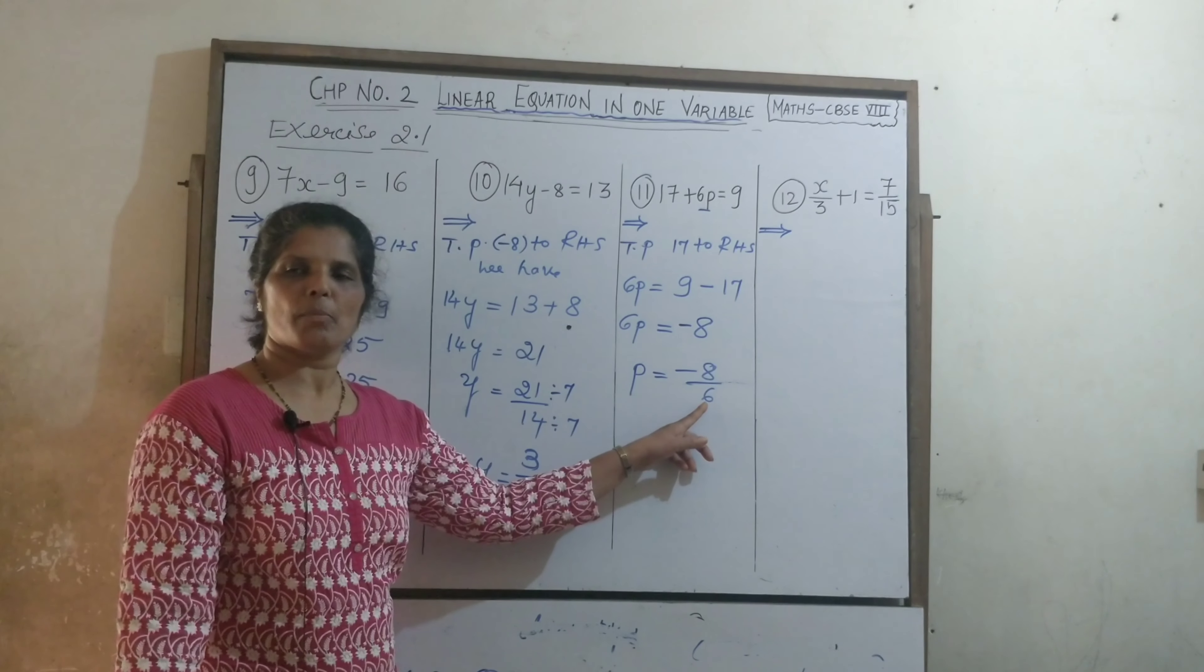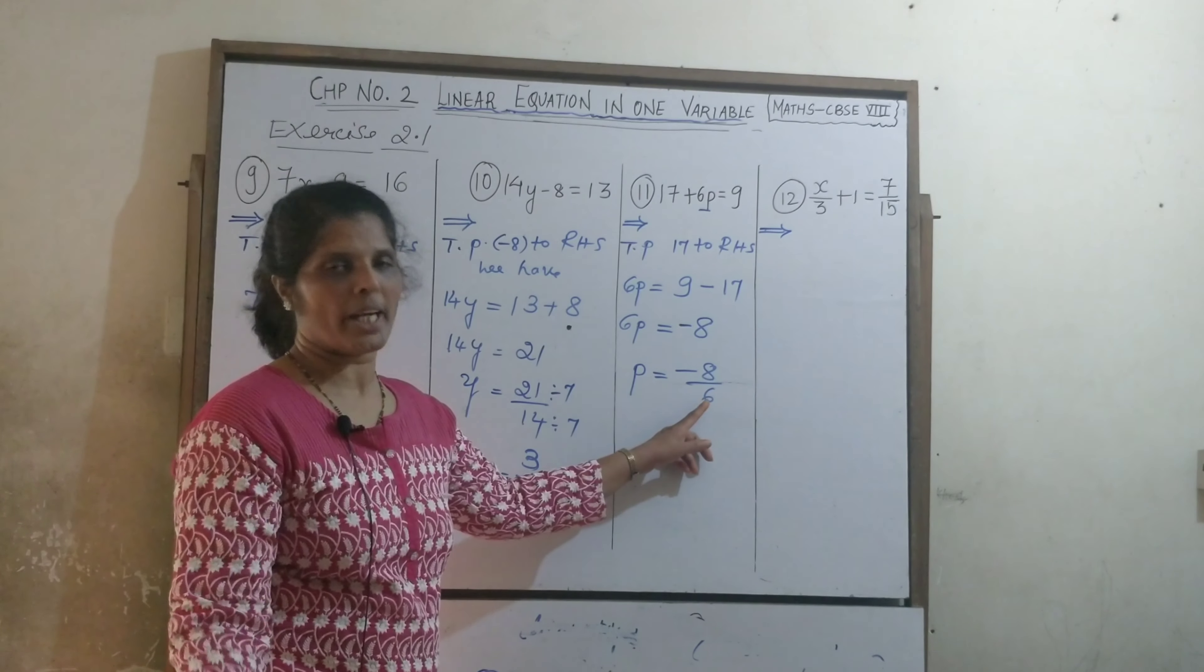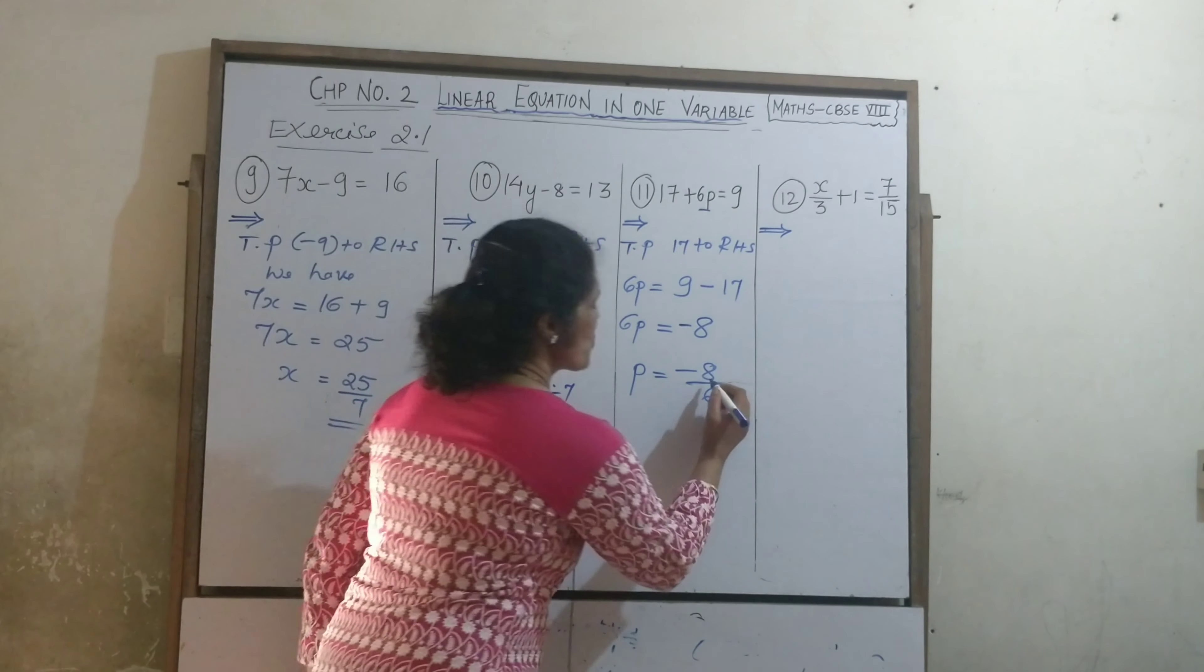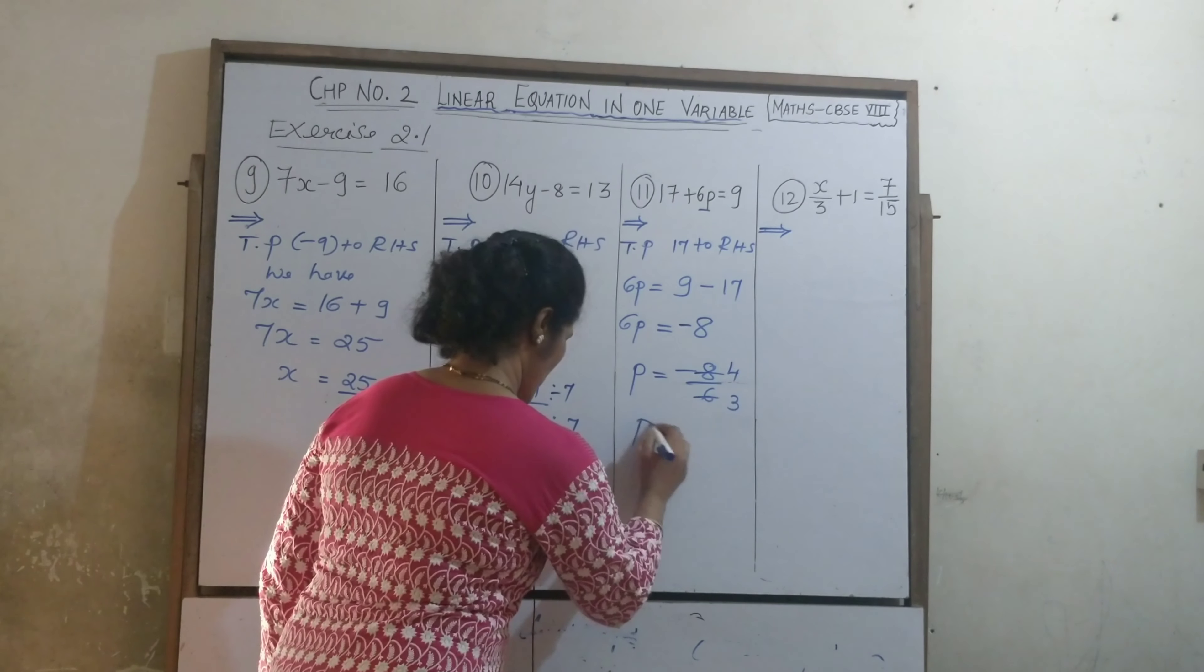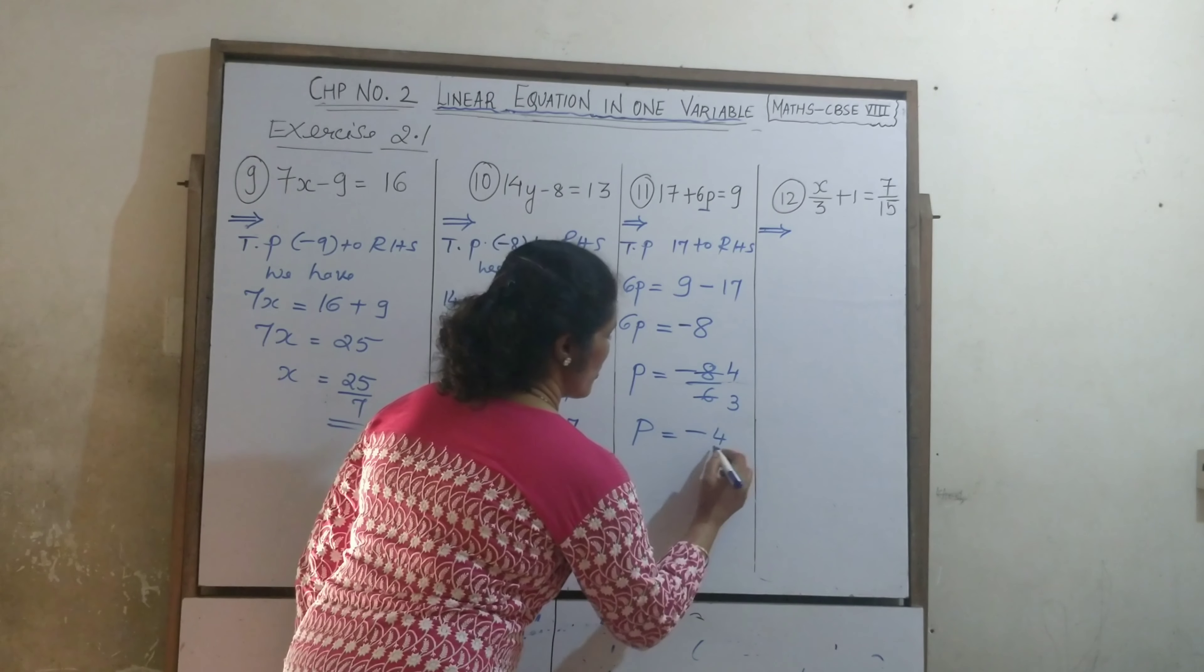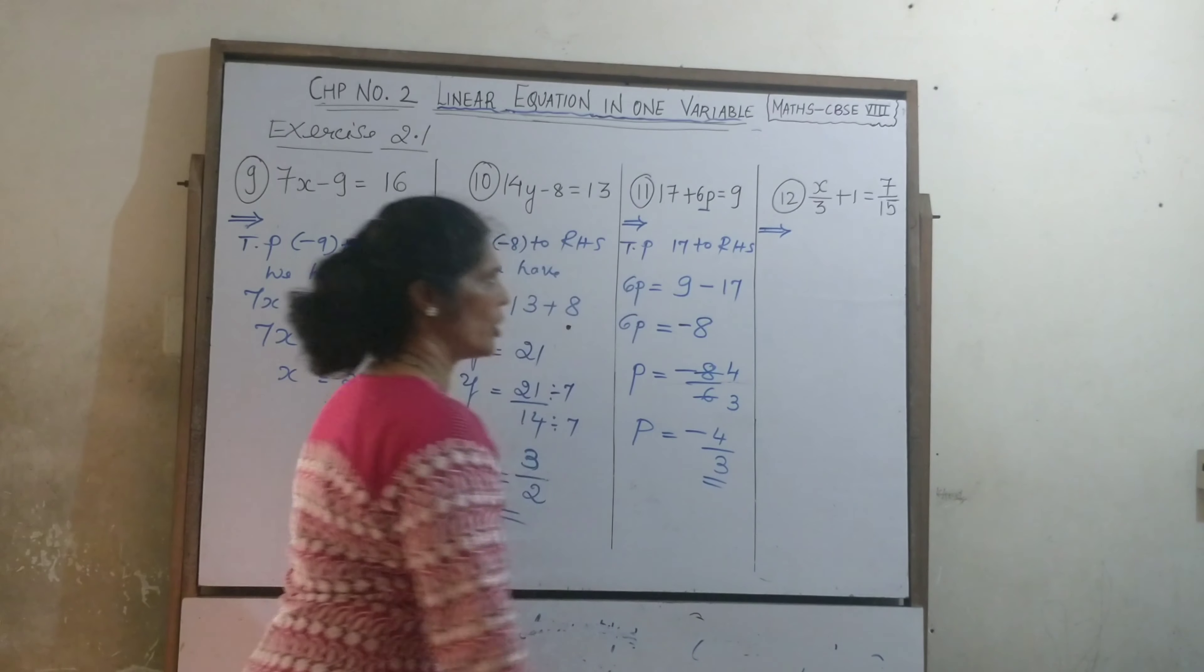Now 8 and 6, which table do they have? 4's table, 2's table. So, divide by 2. 4 times 2 is 8, 2 times 3 is 6. So, what is the value? P is equal to minus 4 upon 3.